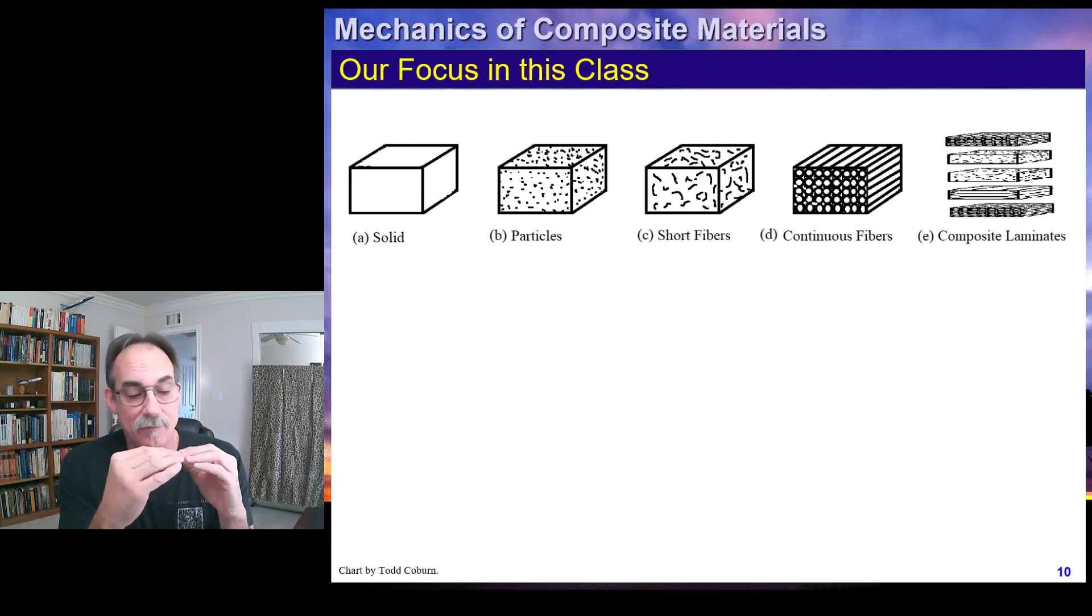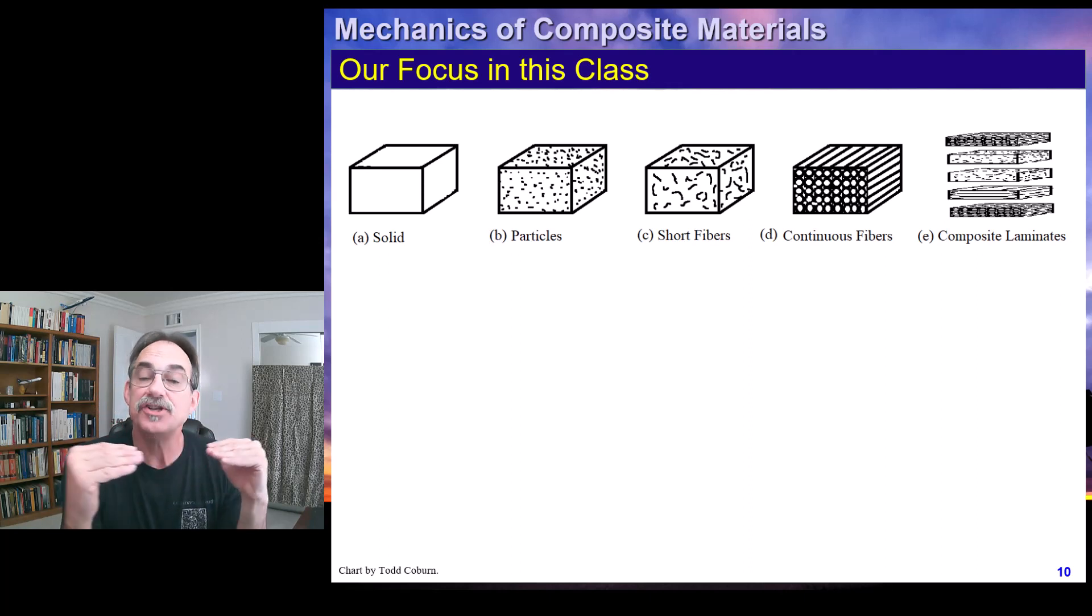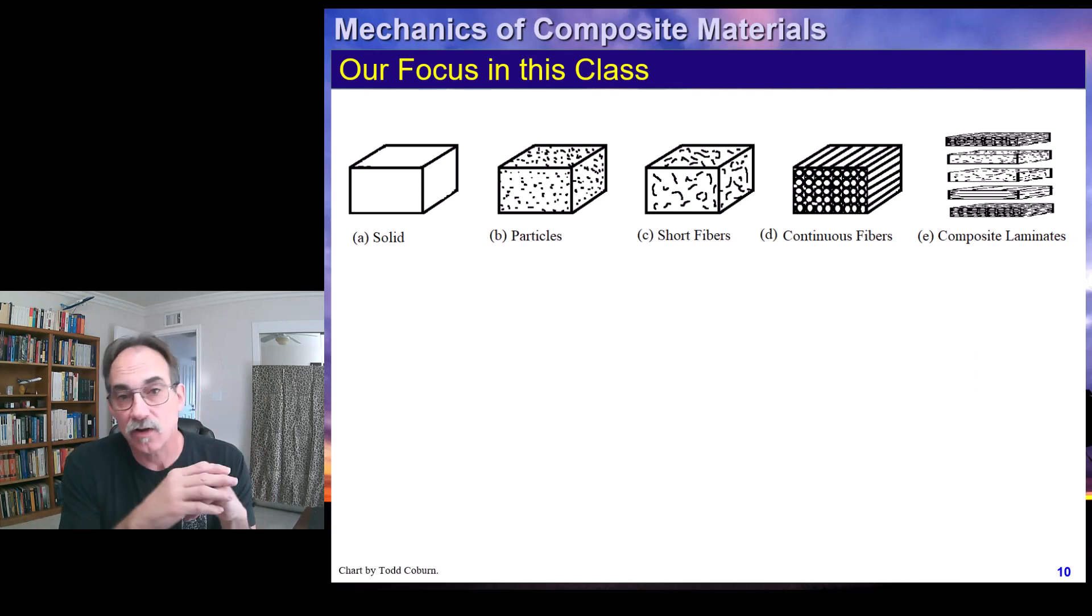So continuous fibers embedded. Now this is very directional. That means we're going to have a different set of properties in the longitudinal direction. We call that the warp direction, the longitudinal direction of those fibers. And also we're going to refer to that as the principal material one direction. The principal material has principal directions. With an isotropic material, it's the same in all directions.